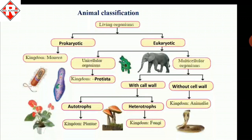Autotrophic and heterotrophic organisms come under those with a cell wall. Autotrophs like plants can make their own food — they do not depend on other organisms. Heterotrophs, such as all organisms in kingdom Fungi, depend on others for food. All organisms without a cell wall come under kingdom Animalia — they are all animals and depend on other organisms for food.